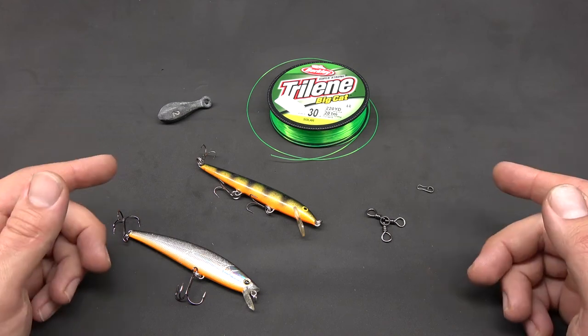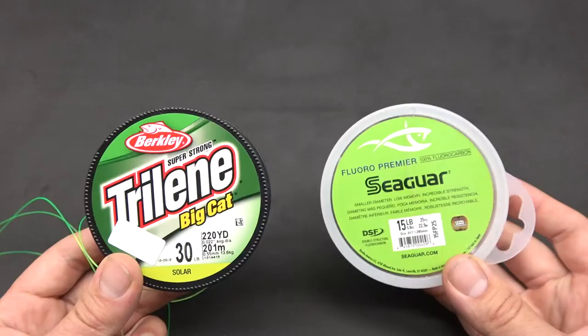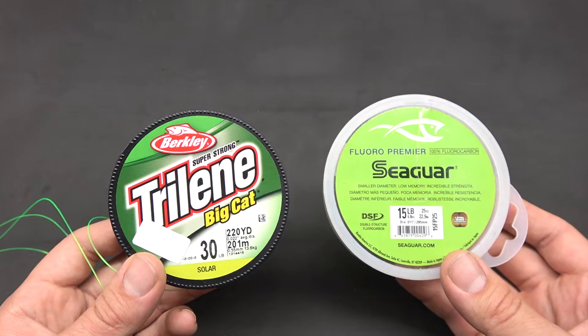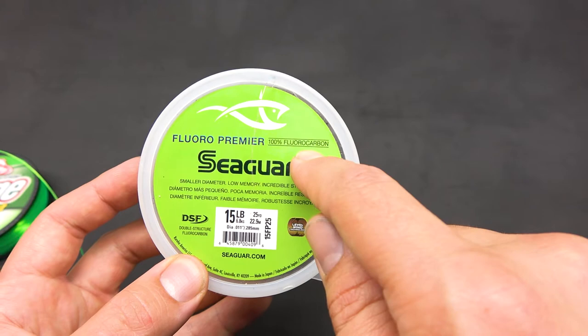I'm going to show you how to tie a three-way rig for walleye. First, you're going to need your leader material of choice. I'm using this bright green line just for demonstration, but I would recommend that you use fluorocarbon in most situations because it's pretty much invisible underwater.